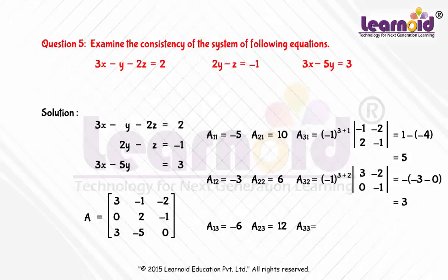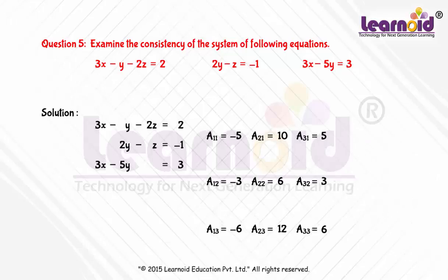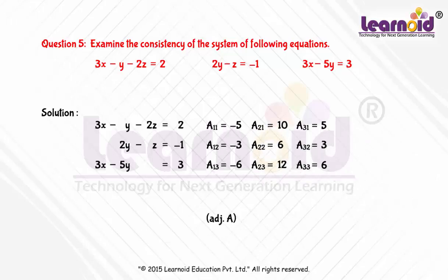A33 is equal to (-1)^(3+3) into determinant [3, -1; 0, 2], which is equal to 6. Therefore, the adjoint of A is the matrix [-5, 10, 5; -3, 6, 3; -6, 12, 6].